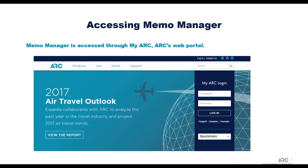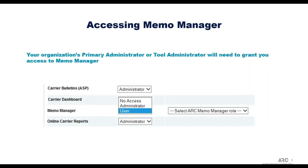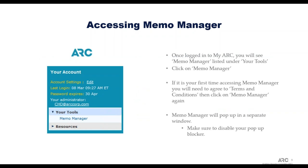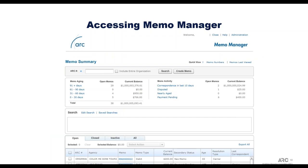Memo Manager is accessed through MyArc, which is ARC's web portal. You need a username and password for MyArc to access Memo Manager. Your organization's primary administrator or tool administrator will need to grant you access. If you don't have access to MyArc, the primary administrator will need to give you that access first. Once logged into MyArc, you'll see Memo Manager listed under your tools. If it's your first time, you'll need to agree to terms and conditions, then click Memo Manager again to open it — it pops up in a separate window, so make sure your pop-up blocker is disabled.